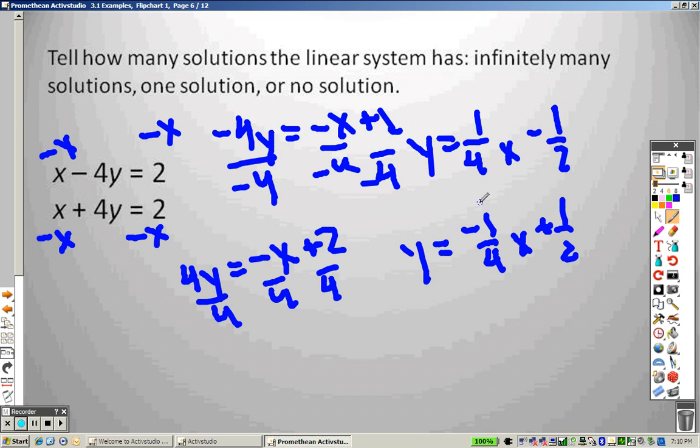And I get y equals negative 1 over 4x plus 1 half. Do they have the same slope? No. Are they the same exact equation? No. Which means they will cross at one point. Which means there is one solution to that problem.